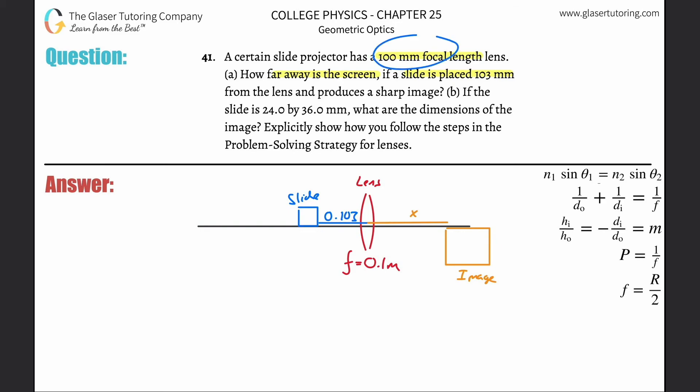The focal length is already converted to meters—that's an inherent property of the lens. What we want to find is this distance x.